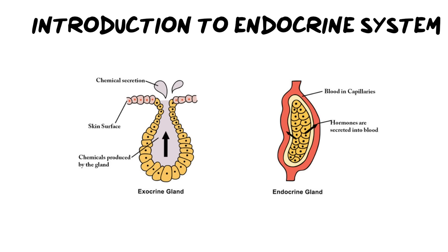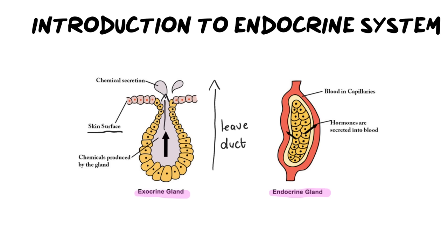Let's dive into the critical differences between an exocrine gland and an endocrine gland. Exocrine glands produce a substance that leaves the gland generally via a duct — basically like a tube or a tunnel. It goes down through that duct to, for example, the surface of your skin like a sweat gland, or it could be the pancreas, which has ducts that allow pancreatic juice to go into your small intestine. So it's a substance leaving the gland that you can physically see.